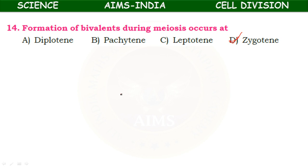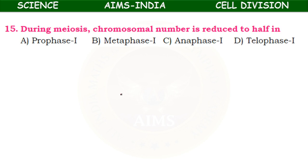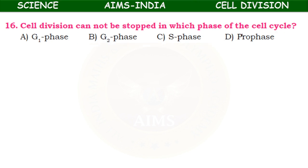During meiosis, the chromosome number is reduced to half — by the end of the first nuclear division. The phases of meiosis 1 are prophase 1, metaphase 1, anaphase 1, and telophase 1. By the end of meiosis 1, the chromosome number is reduced to half — so the answer is telophase 1.